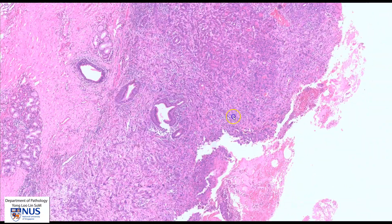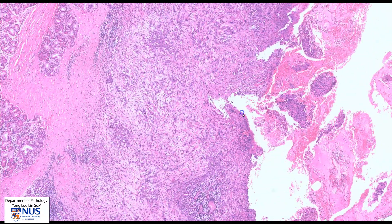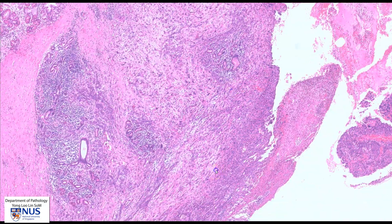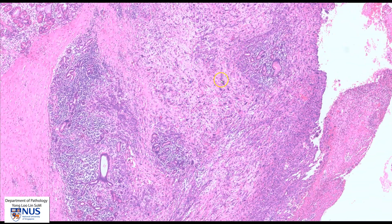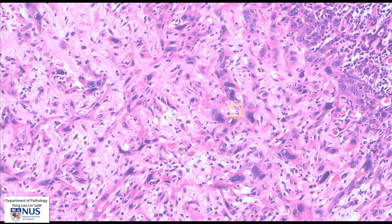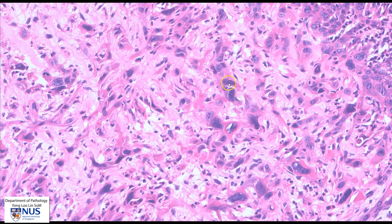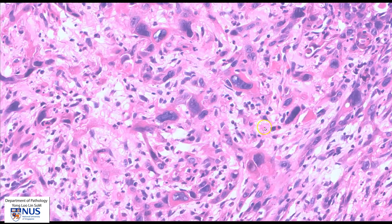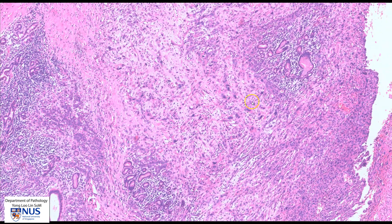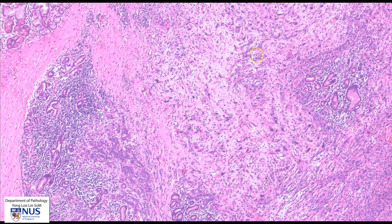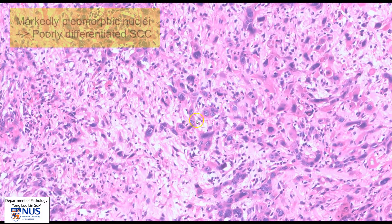Let's move further downwards, and this is coming towards the true vocal cord region. I just want to draw your attention to this area where the cells really appear quite pleomorphic. The nuclei are very large, irregular, and hyperchromatic. In some areas the nuclei are very elongated, so this particular area is markedly pleomorphic.